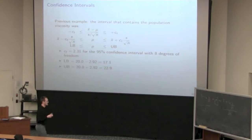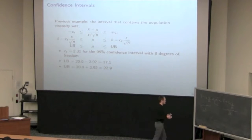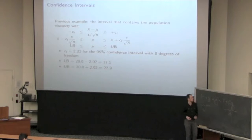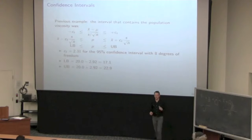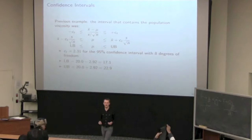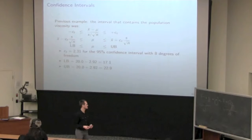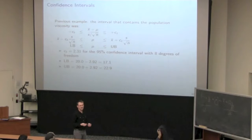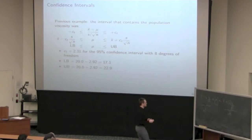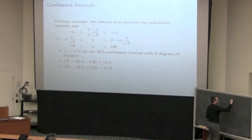If we look at that formula, there are only two things we can influence to make that bound narrower, and that is CT and N. You cannot influence anything else. X-bar is what my data is, and S is the standard deviation of my data as well. So there are two things I can change: choose a different level of confidence, which determines what CT is, and my number of samples.